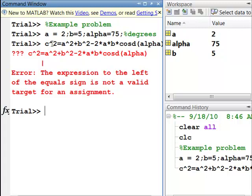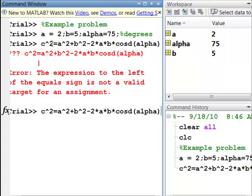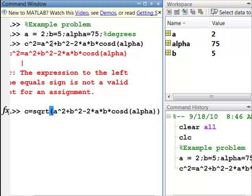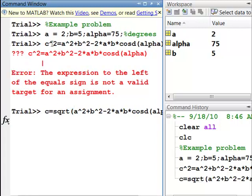So, you actually need to do the algebra to solve for C, which in this case is just taking the square root of both sides. So, we can rewrite that. I'll hit the up arrow to bring up the same equation just to scroll back through the command and say C is equal to square root of all of this stuff. And now we've calculated C. 4.8809.